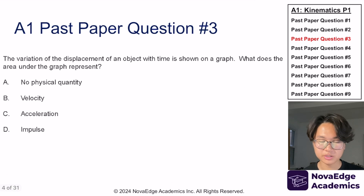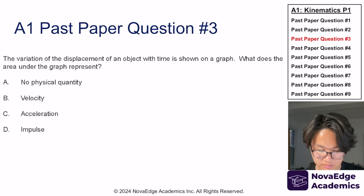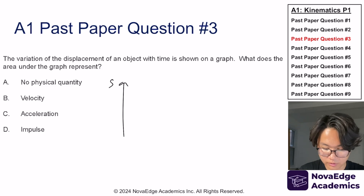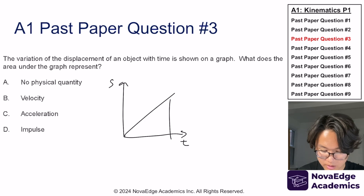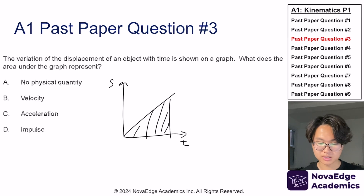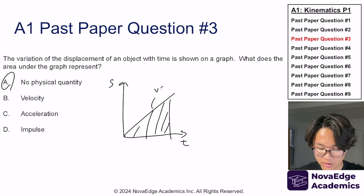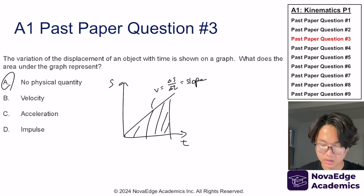Now let's try topic A1, past paper question 3, paper 1. They're asking what the area underneath the curve of a displacement-time graph represents. This actually has no physical quantity — it was a trick question. The only thing we can extract from a displacement-time graph is the velocity, which is the slope. The area underneath the curve does not matter.